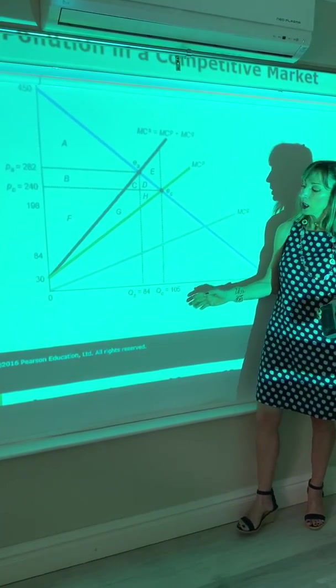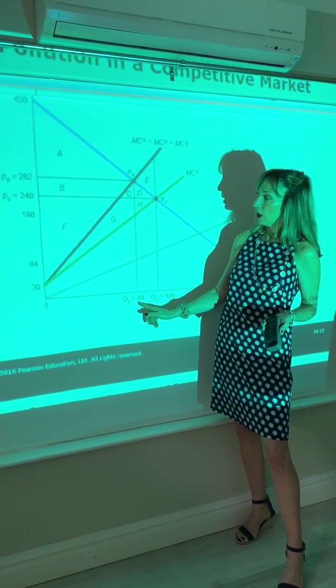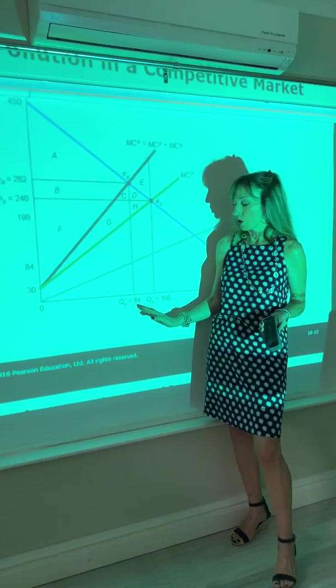So it's optimal if you restrict that output. How could we achieve that? You could have a standard. Government could introduce a standard at this level, so producers can't produce more.